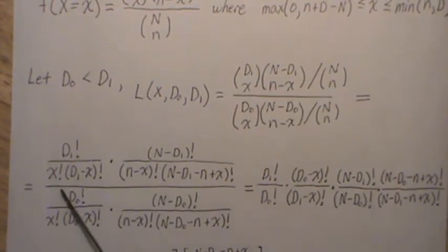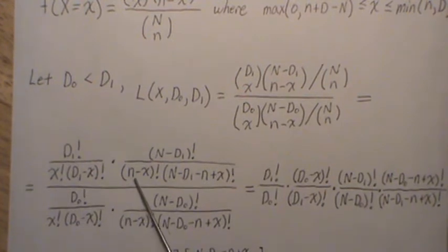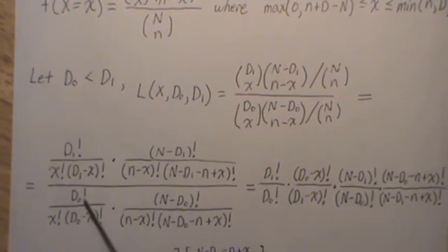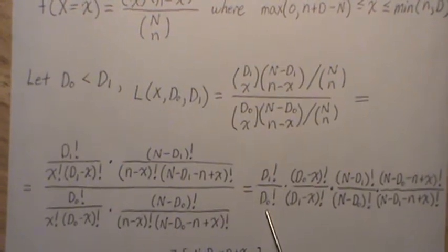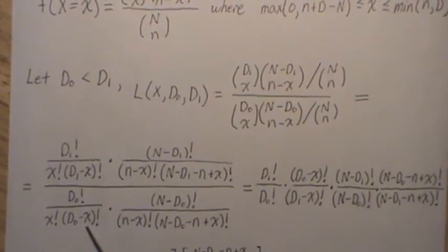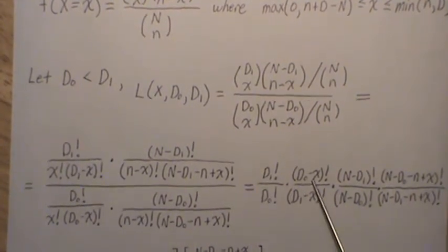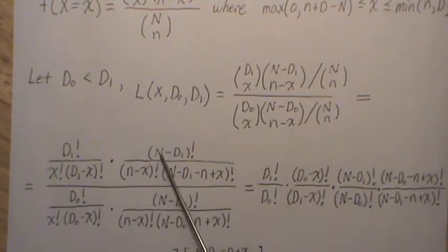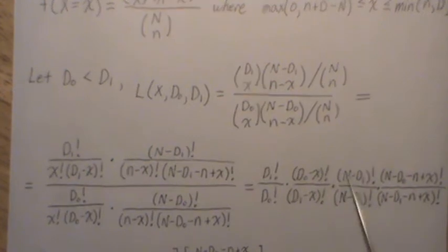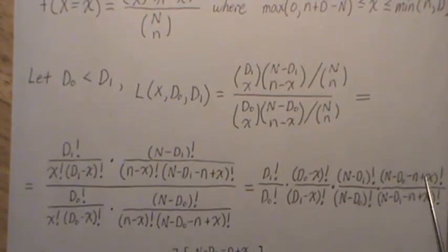Now there's some commonalities. The X factorial and X factorial cancel. N minus X factorial cancels. So the D1 factorial divided by D0 is here. D0 minus X is inverted and multiplied. Here we have N minus D1 divided by N minus D0, and then of course this piece and this piece go right here.